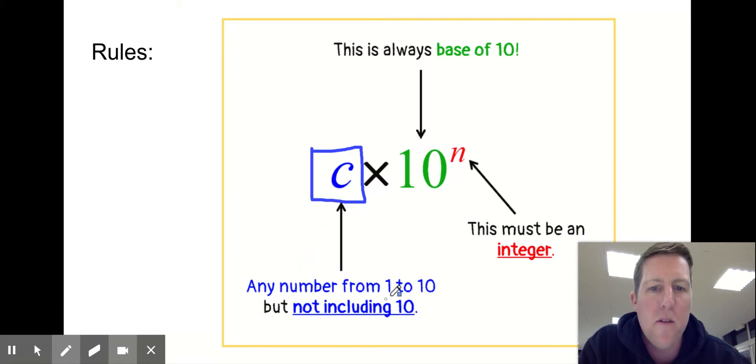It can be any number, but it must be between 1 and 10, not including 10. So we can only use numbers between 1 and 10, like 1.3 or 6.7 or 5.42613, whatever. You're going to use some strategies to decide what number goes here, but the rule for this section is that this number must be between 1 and 10.